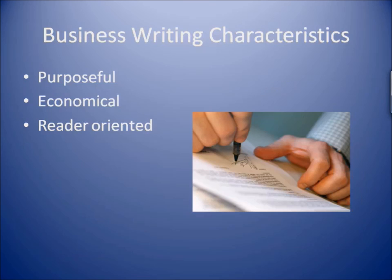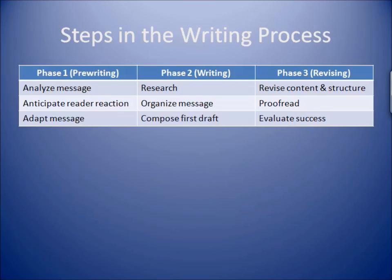Let's turn our focus to the actual process of business writing. We're now ready to discuss the three steps in the writing process, which include pre-writing, writing, and revising. Phase one, pre-writing, begins by analyzing the purpose of the message. You can best identify the purpose by answering a simple question: What do I hope to accomplish by writing this message? Next, you anticipate the reader's reaction by profiling the audience. In the final step of phase one, you will adapt your message by choosing the appropriate channel, language, and outline to accomplish your purpose.